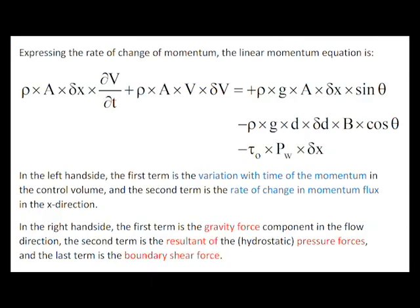The integration of the Navier-Stokes equation over the control volume can then be expressed in an integral form. Using the expression of the rate of change of momentum, we obtain the linear momentum equation. In this equation, on the left side, the first term is the variation with time of the momentum in the control volume.